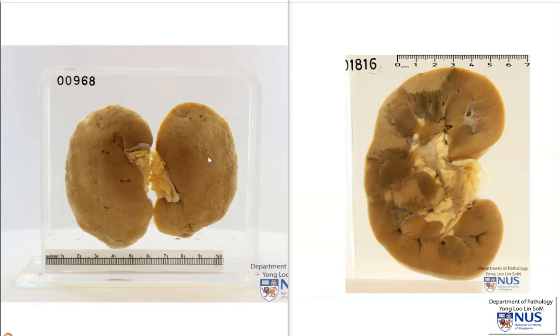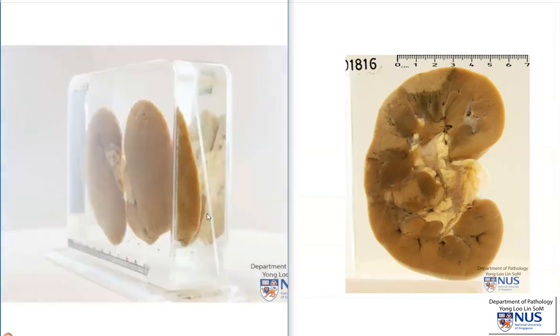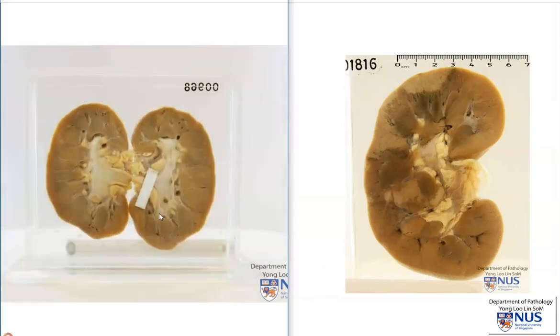There may be small cortical scars, as you can see here. The cortex is thinned, and the corticomedullary junction is blurred.